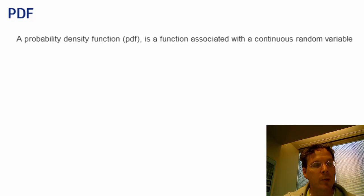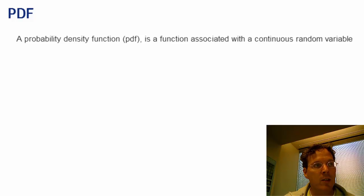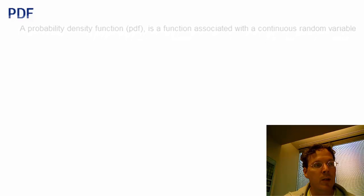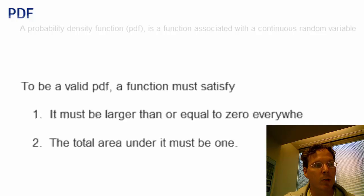Just like a probability mass function has specific rules it has to follow, a probability density function has specific rules too. Specifically, to be a valid probability density function, a function must satisfy being greater than or equal to zero everywhere, and the total area under it must be 1.